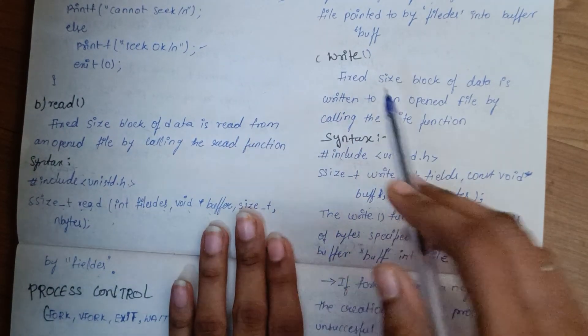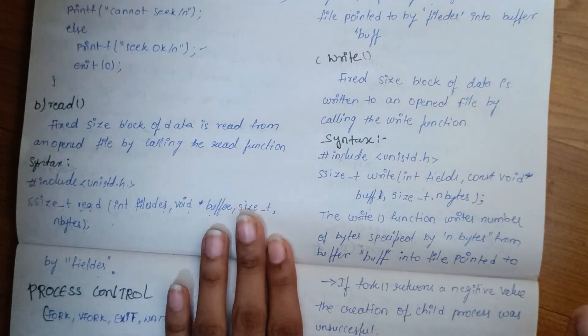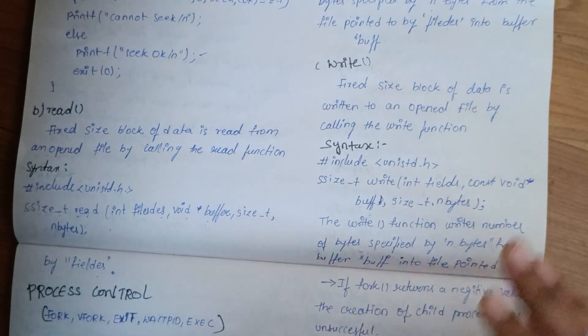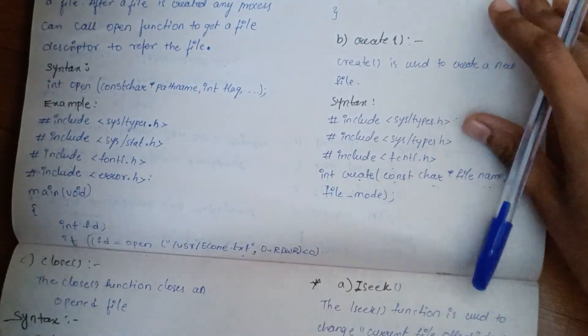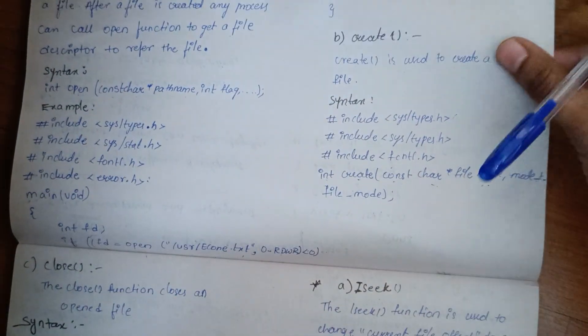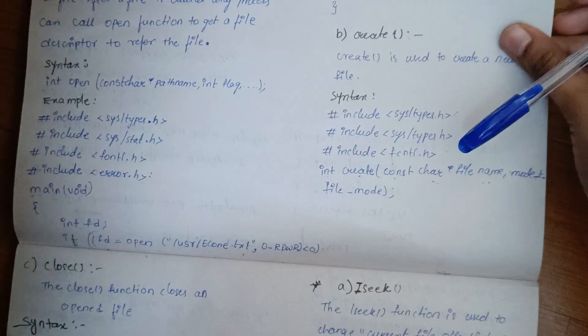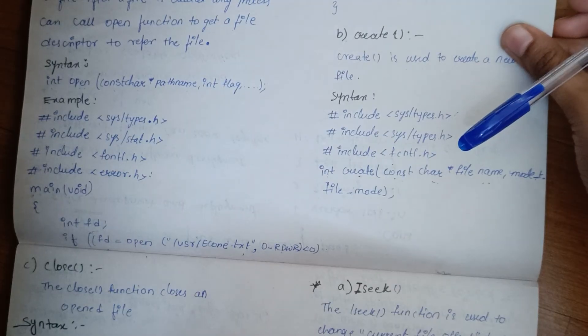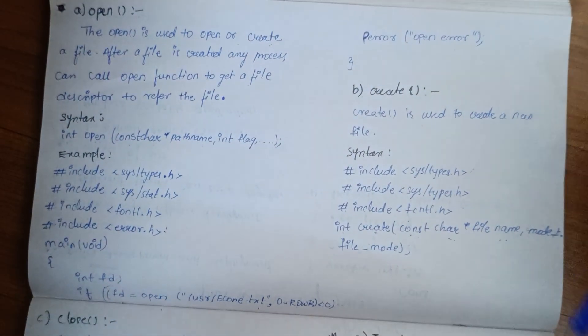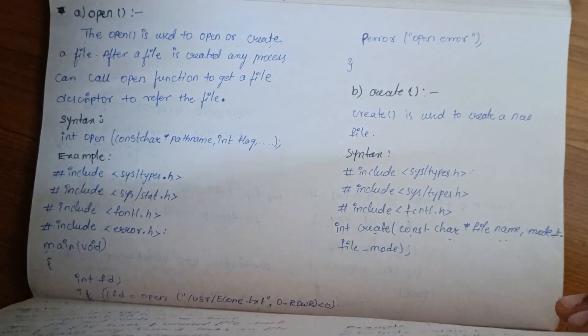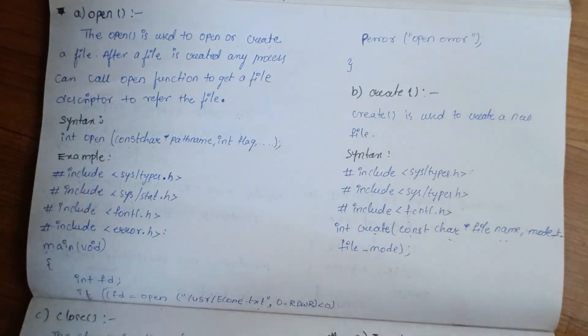So this is the difference between read and write. These are the six file input output functions. In the next video, we will show you process controls.